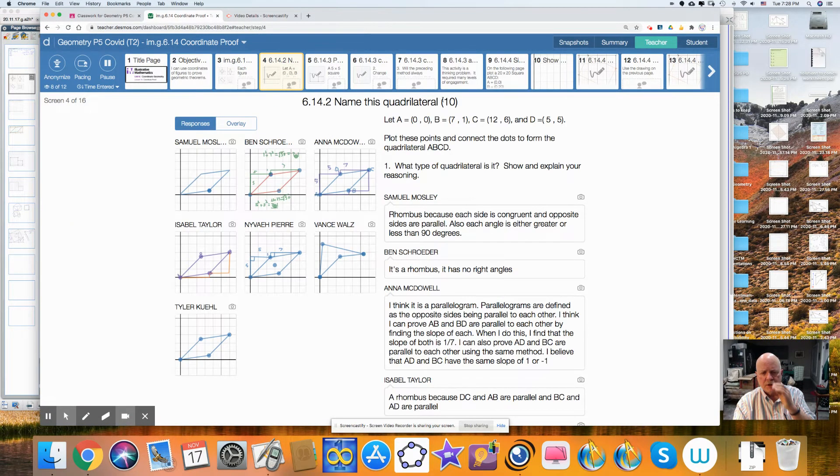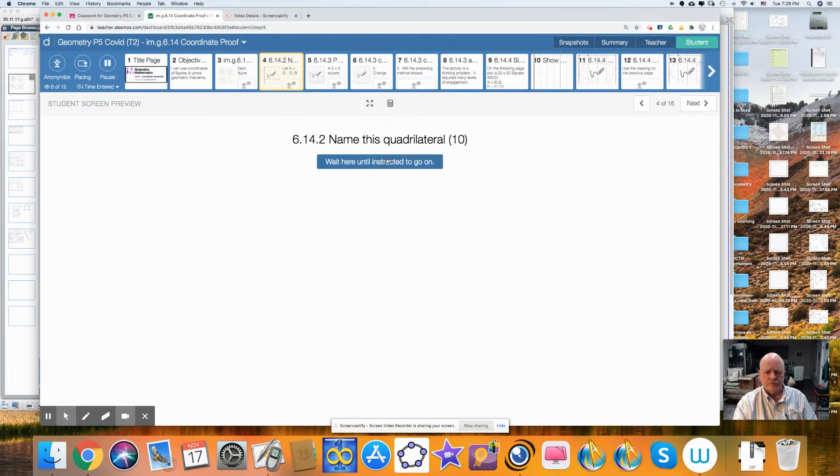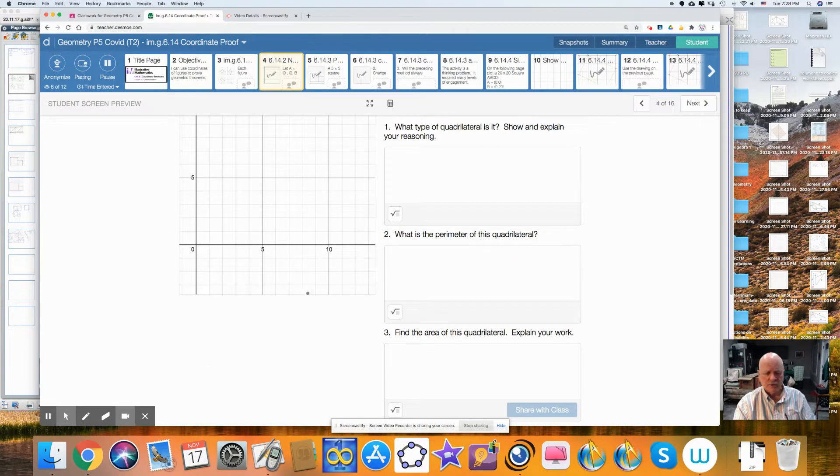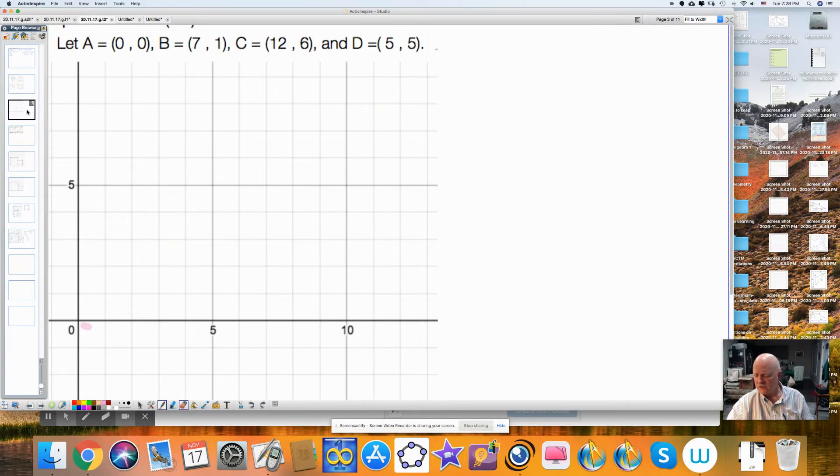Our next question says to name the quadrilateral. We're supposed to plot these points. What type of quadrilateral is it? What is the perimeter? What is the area? So I'm going to plot these points. I have (0,0), (7,1), (12,6), and (5,5). When I connect these, I get something like this. This is a parallelogram because this is a slope of 5/5 and this is 5/5. This is 1/7 and this is 1/7. So the opposite sides are parallel. It is a parallelogram.